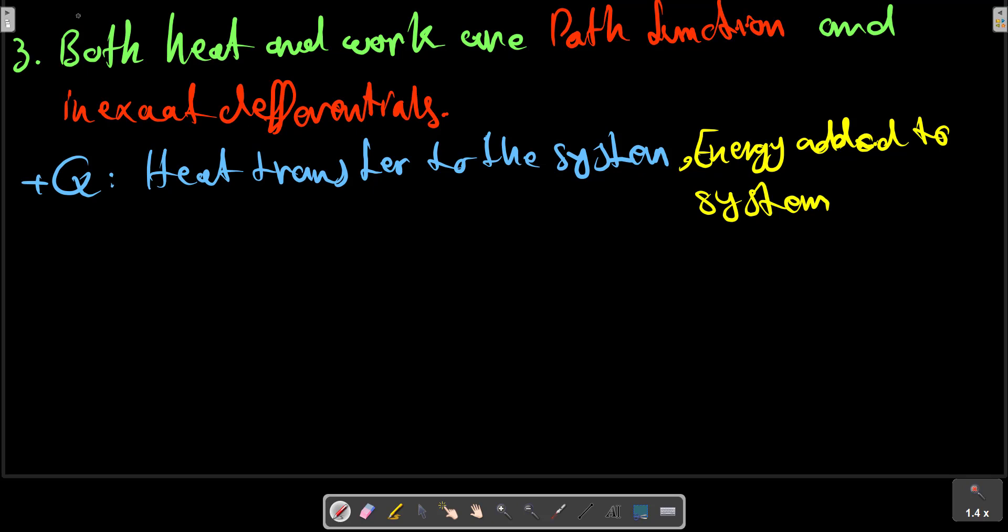And plus W represents work. Positive value represents work done by system, thus energy leaving the system.